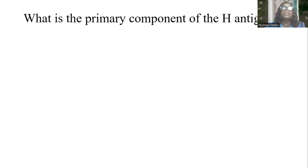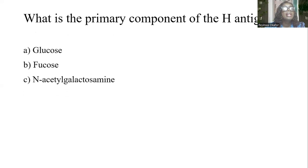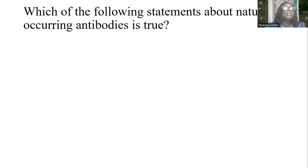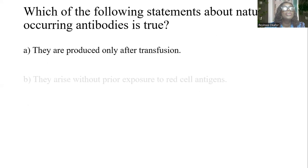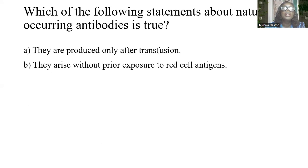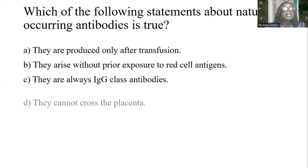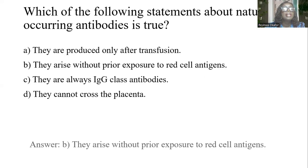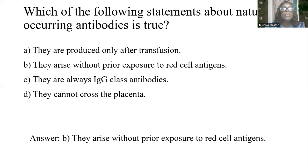What is the primary component of H antigen? Options: Glucose, Fucose, N-acetylgalactosamine, D-galactose. The answer is B: fucose. Which of the following statements about naturally occurring antibodies is true? A) They are produced only after transfusion. B) They arise without prior exposure to red cell antigens. C) They are always IgG-class antibodies. D) They cannot cross the placenta. The answer is B: they arise without prior exposure to red cell antigens.